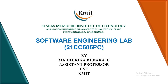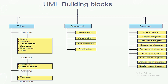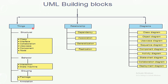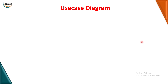Hello students, in this session let us learn about how to draw the use case diagram. In the last class I told you that UML is basically divided into three parts: things, relationships, and diagrams. Things are divided into structural, behavioral, grouping, and annotation. We have four different types of relationships and nine different types of diagrams. In today's session we'll be talking about how to draw the use case diagram.